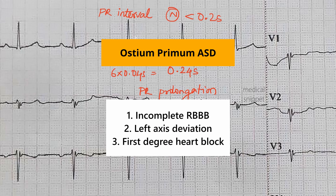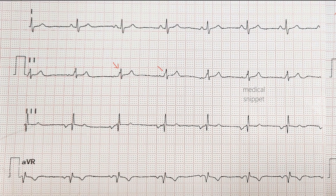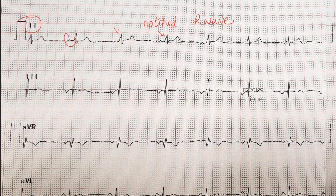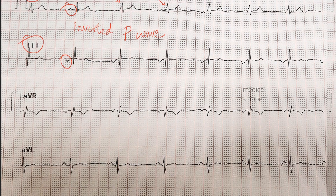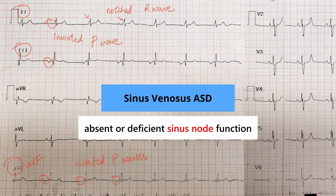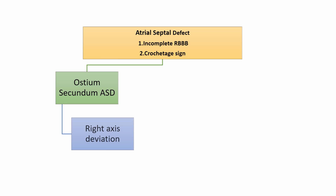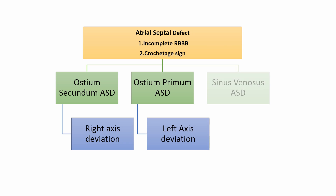Let's see another ECG. There is incomplete right bundle branch block — that is RSR pattern in V1. There is a notched R wave in lead 2, that is the Crochetage pattern is present. And if you carefully look, there are inverted P waves in the inferior leads — that is leads 2, 3 and AVF. The inverted P waves in the inferior leads are suggestive of absent or deficient sinus node function. These findings point towards the diagnosis of sinus venosus type of atrial septal defect. It should be noted that ECG findings can only point towards the diagnosis of ASD — it has to always be confirmed by echocardiography.